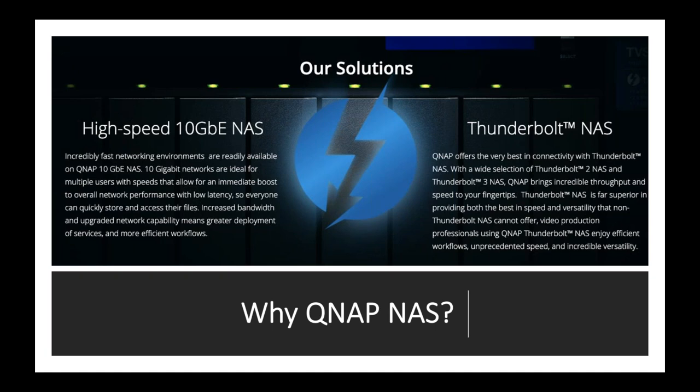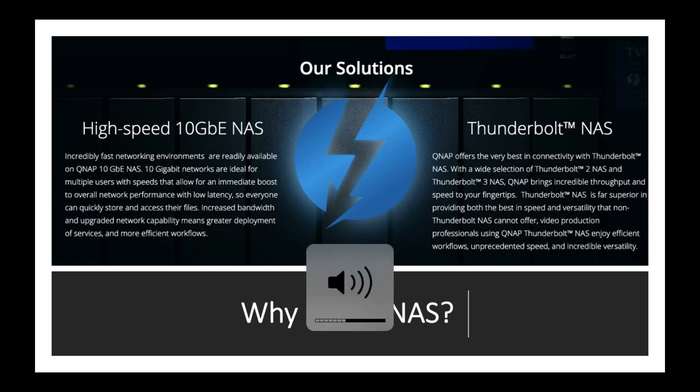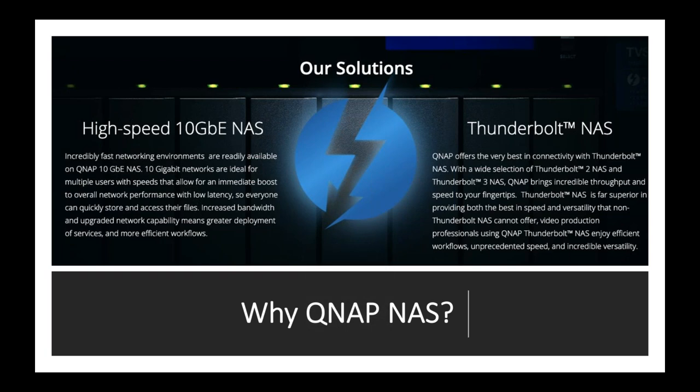10GbE is now a commonly used connection, which means a lot of our competitors offer 10GbE solutions. What a lot of our competitors don't offer, though, is a Thunderbolt solution. Thunderbolt is a popular connection in the M&E world given its speed and widespread use on Macs — it's a huge selling point for adding QNAP to your workflow. QNAP aren't unique in offering a Thunderbolt NAS solution, but we were first, and we certainly have the most stable and usable products in this market.